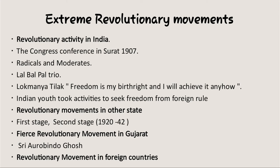Revolutionary leader Bhagat Singh dropped a bomb on the Central Parliament on 8th April 1929. He voluntarily surrendered and was arrested on 12th June 1929, and was later hanged to death by the Britishers. When writing about extreme revolutionary movements, three points must be included: revolutionary activity in India, revolutionary movement in other states, revolutionary movement in Gujarat, and revolutionary movement in foreign countries.